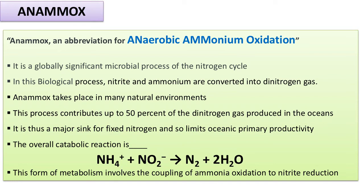Anammox takes place in natural environments and contributes up to 50 percent of the dinitrogen gas produced in the oceans, making it a globally significant microbial process. It is a major pathway for fixed nitrogen removal and limits oceanic primary productivity. The overall reaction shows ammonium ions combining with nitrites to produce nitrogen gas and water — a very environment-friendly process.